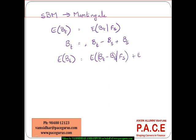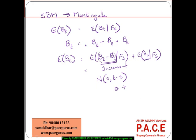The term E[B_T minus B_S | F_S] is an increment of a Brownian motion, which follows a normal distribution with mean 0 and variance T minus S, so its expected value is 0. The term E[B_S | F_S] equals B_S itself since B_S is already known at time S. Overall, the expected value of B_T given F_S is B_S, confirming that Brownian motion follows a martingale.